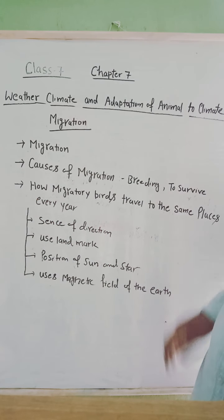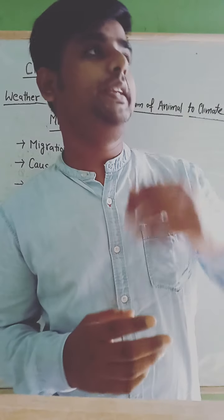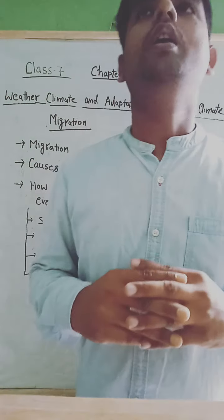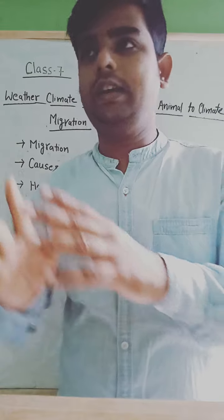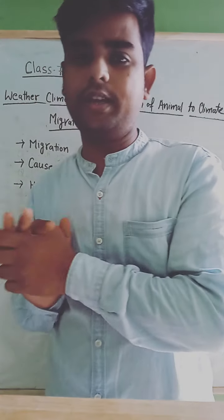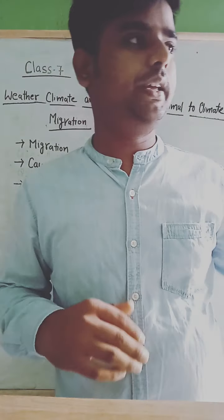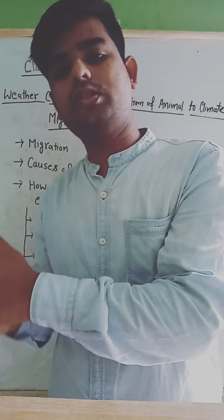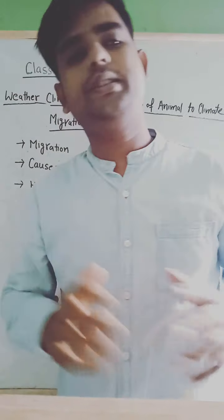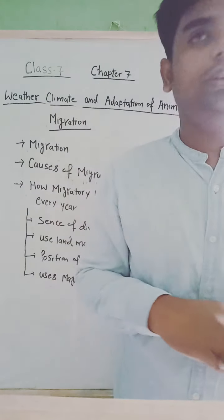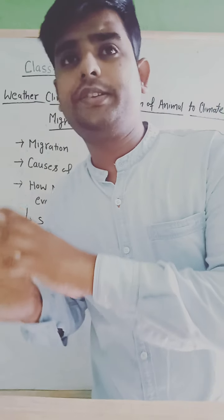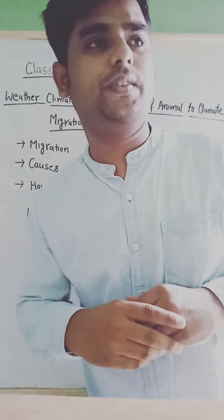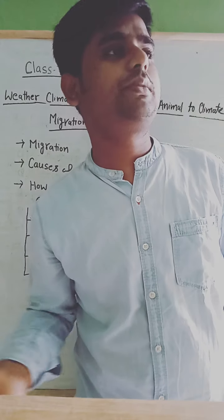The next question is: how do migratory birds travel to the same places every year? The birds migrate because climatic conditions don't suit their bodies, so they move to other places. But when the climatic conditions become suitable for their bodies, they return. They travel thousands of kilometers every year to migrate.